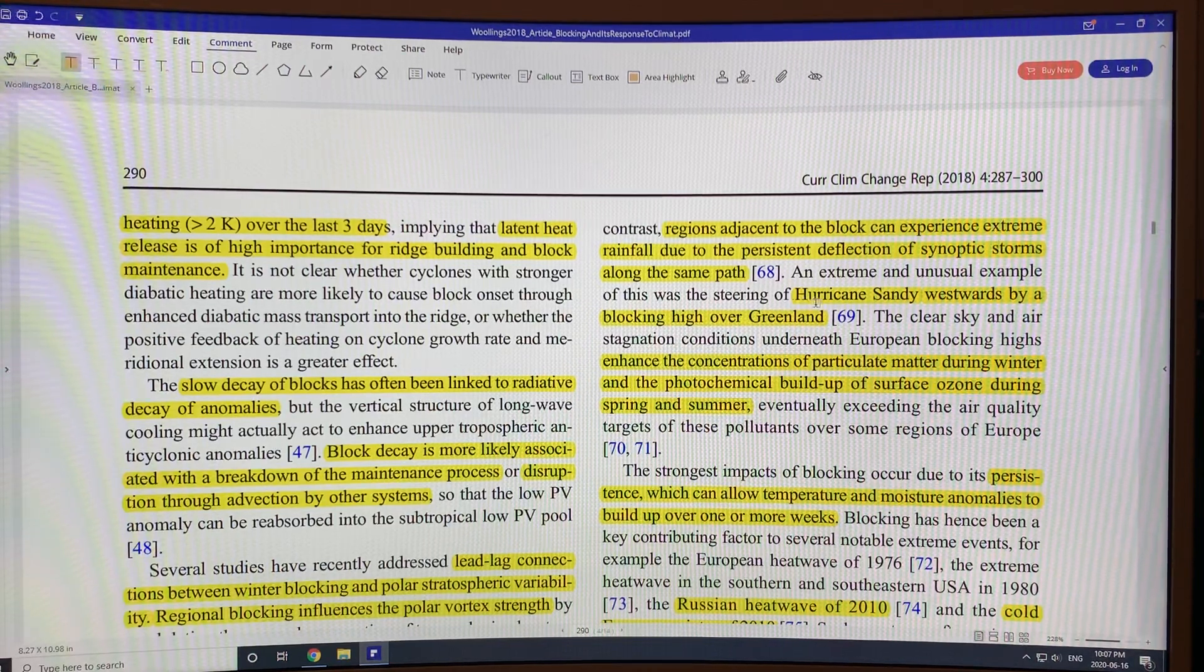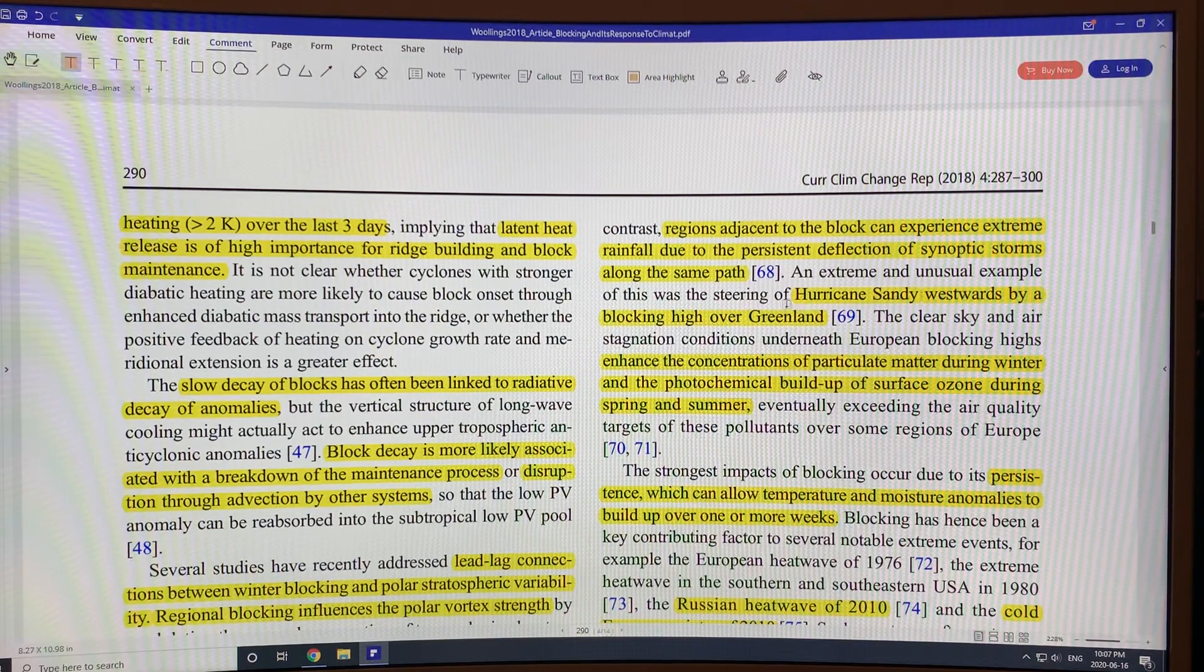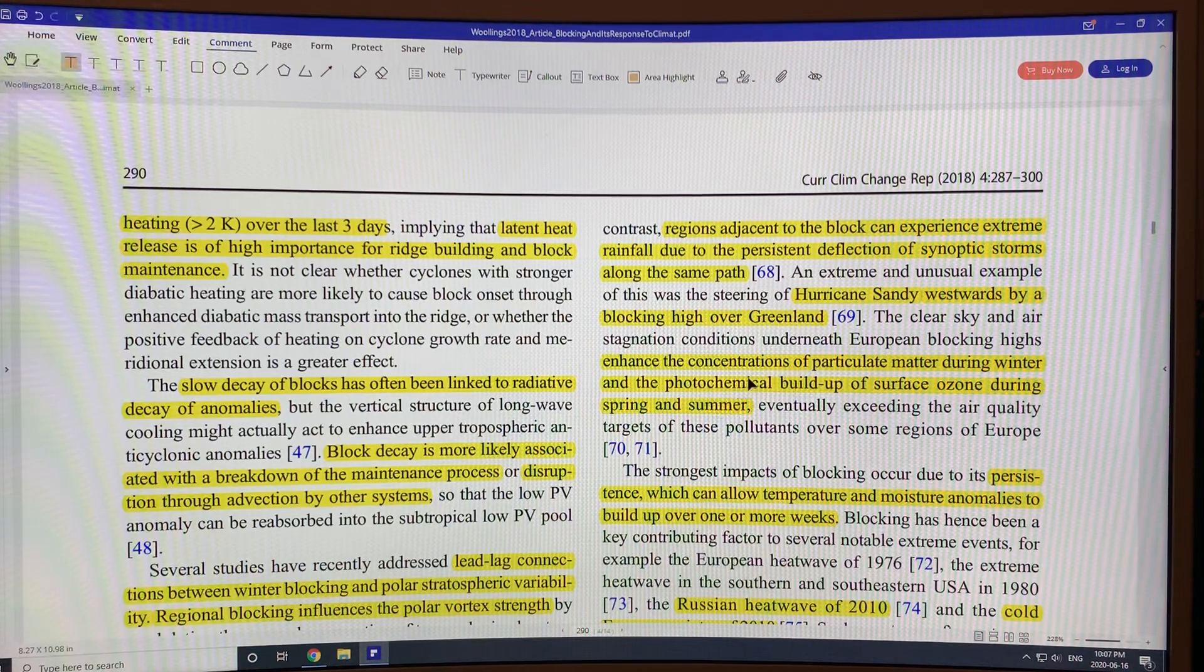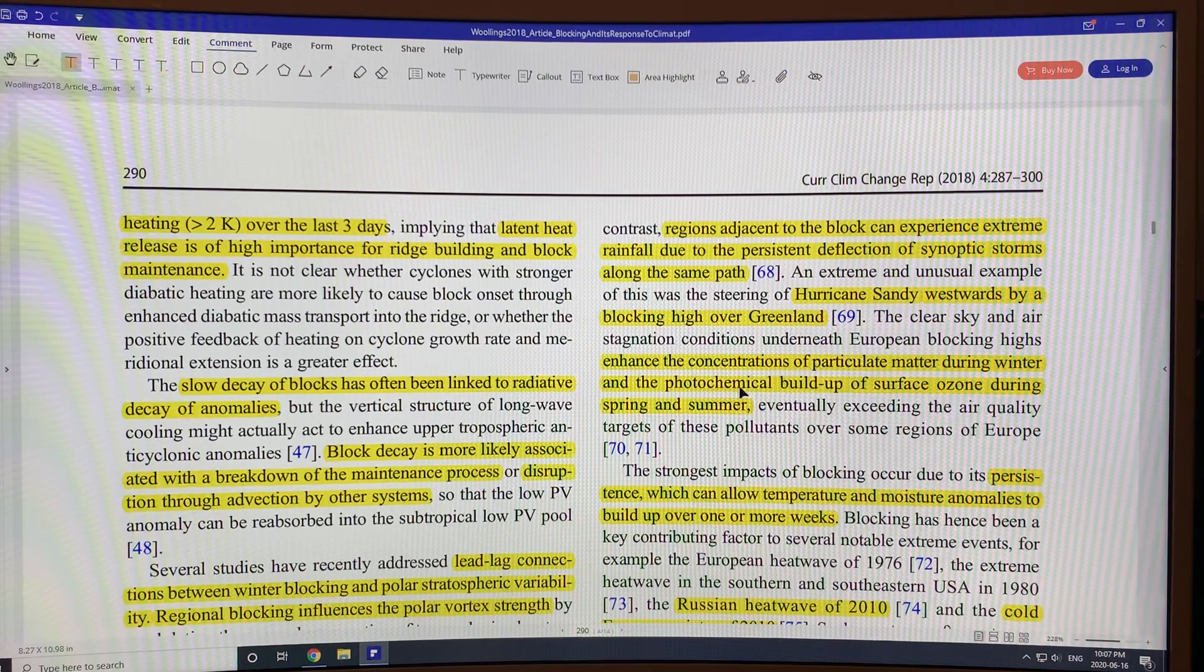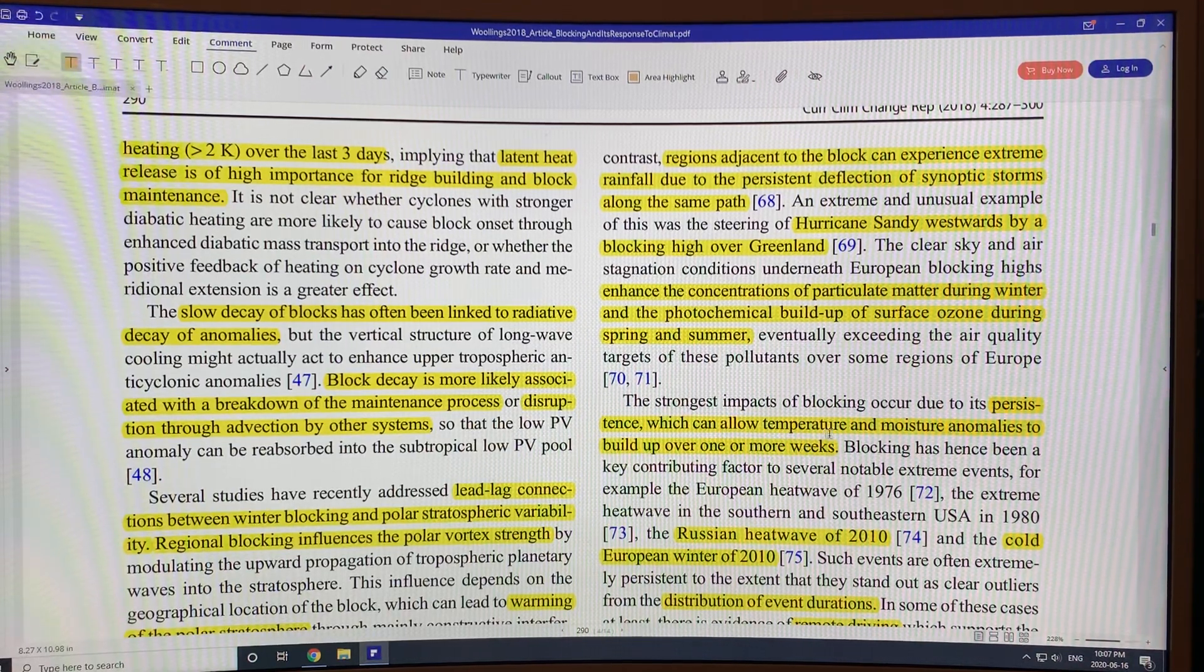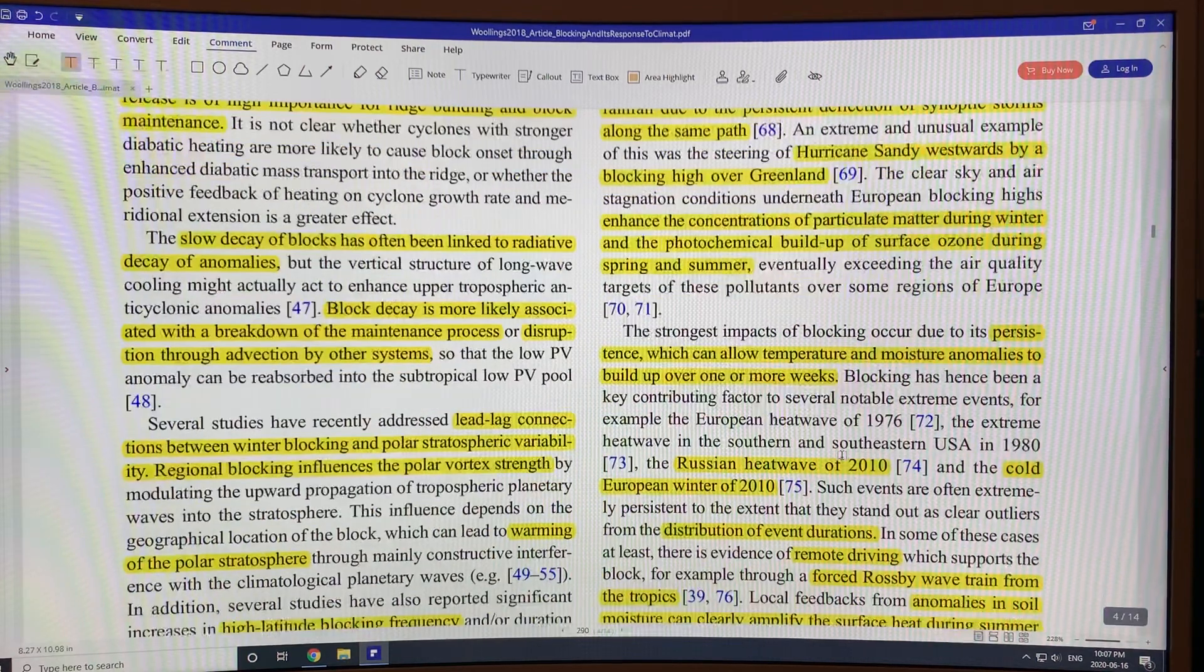Blocks can steer hurricanes. So Hurricane Sandy was steered westwards and went across the coast into New York City because of a blocking high over Greenland. And you can also get particulate matter building up in the winter in these blocked regions or surface ozone in the spring and summer. The strongest impacts of blocking are due to its persistence, which can allow temperature and moisture anomalies to build up over one or more weeks.